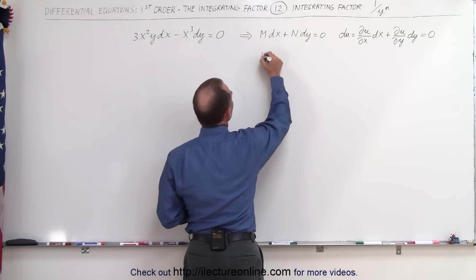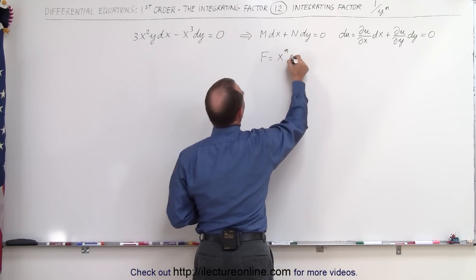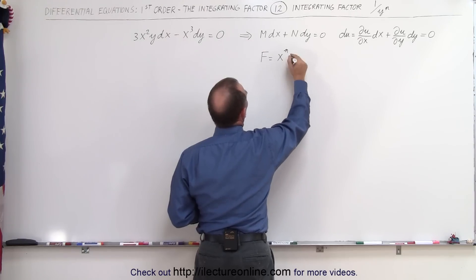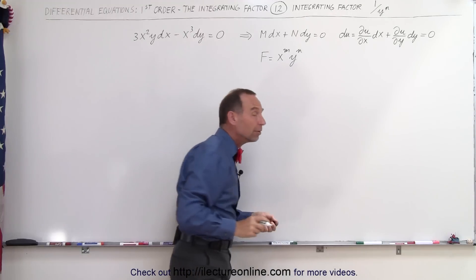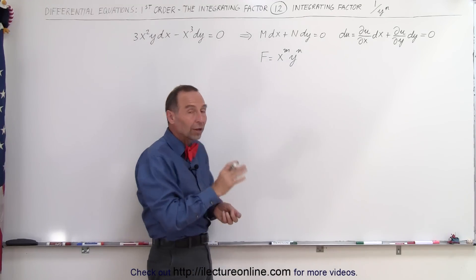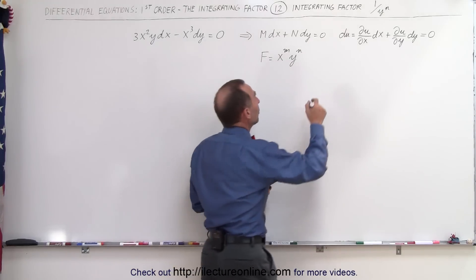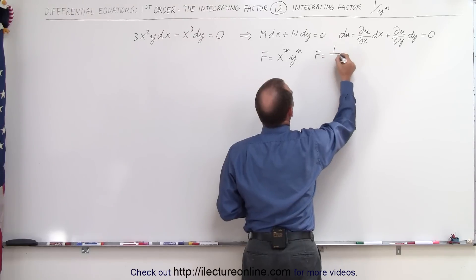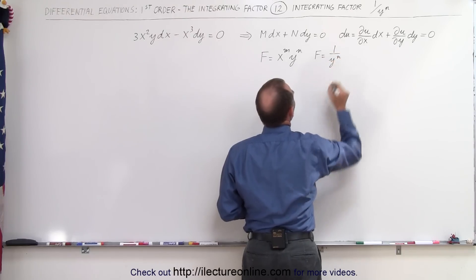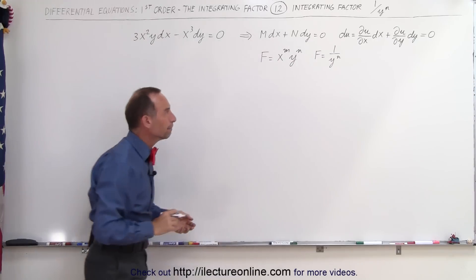Normally we assume that the integrating factor will be some sort of x to the m, y to the n power. But it could be that it only needs one of those two variables, and it could be that the variable is in the denominator. For example, we can assume that the integrating factor may be something like 1 over y to the n power, just like what we have in our example title there.